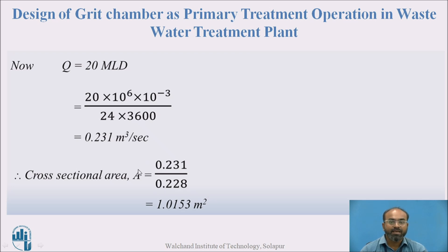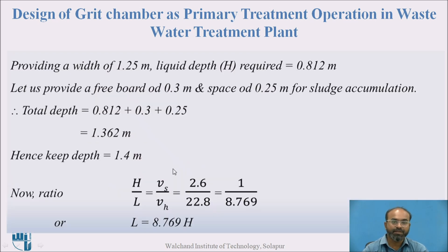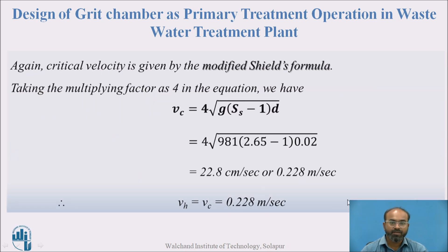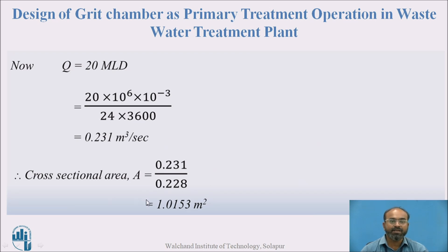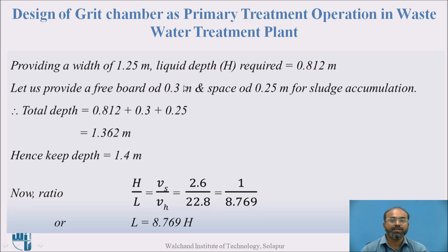Using Q = A × V, cross-sectional area A = Q / V = 0.231 / 0.228 ≈ 1.0153 m². Providing a width of 1.25 m, the required liquid depth H = 0.812 m. Adding a freeboard of 0.3 m and 0.25 m for grit accumulation, the total depth becomes 0.812 + 0.3 + 0.25 = 1.362 m, which we round up to 1.4 m.